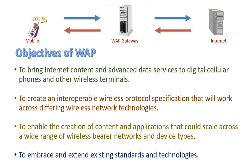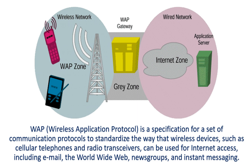To embrace and extend existing standards and technologies. In the diagram, you can see that the mobile and PDA are connected with the tower, forming the wireless network called the WAP zone. On the other side there is the internet and the application server, which is the wired network. These wireless and wired networks are connected with the WAP gateway, so WAP provides connectivity to the internet for mobile devices and PDAs.